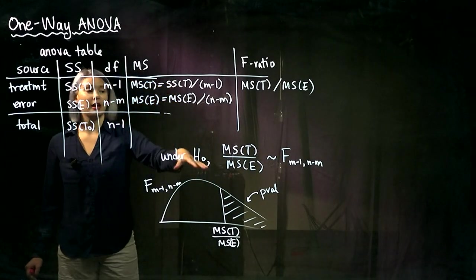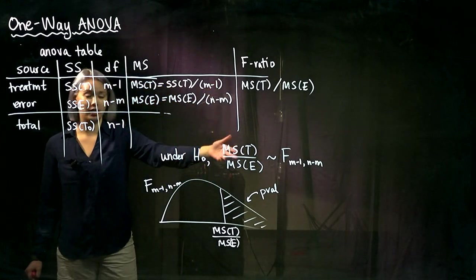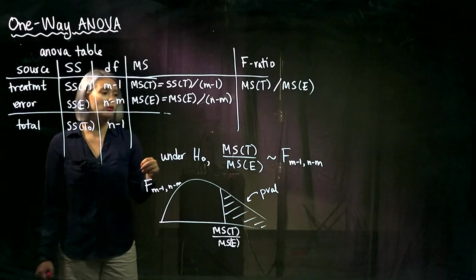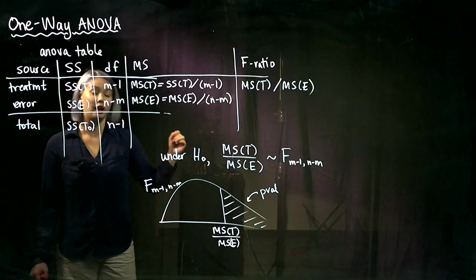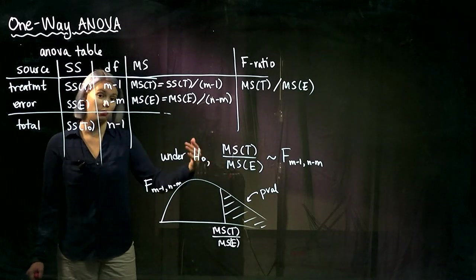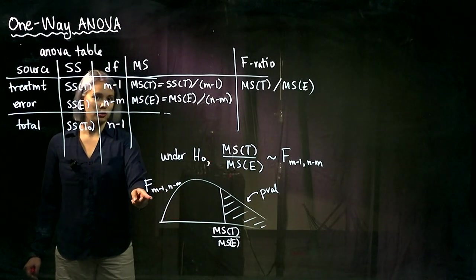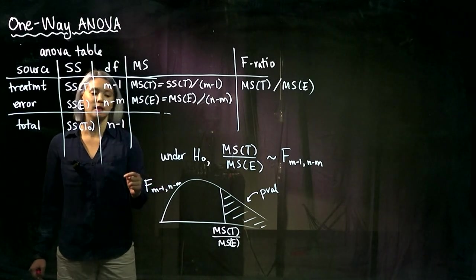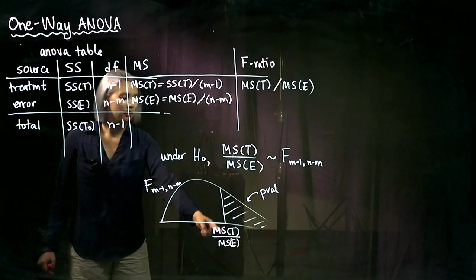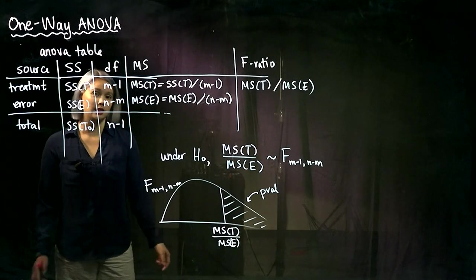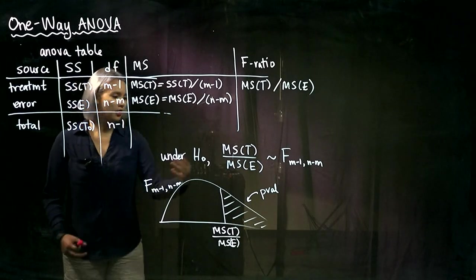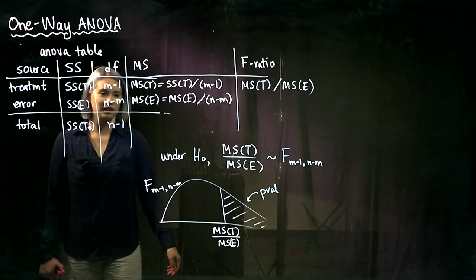So remember under the null hypothesis, that test statistic has an F distribution with M minus one degrees of freedom and N minus M degrees of freedom. And remember, the larger the test stat is, the more evidence we have against the null hypothesis. So here I've drawn our F distribution with M minus one and N minus M degrees of freedom. And then here marked is our test statistic, MST over MSE. And then the P value is just the area to the right of that.